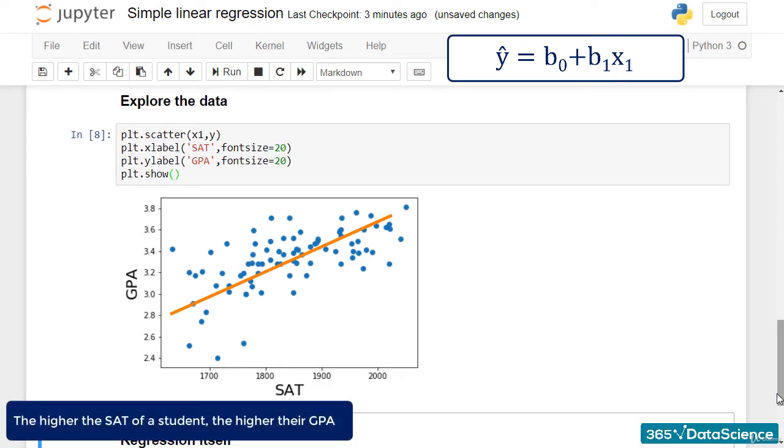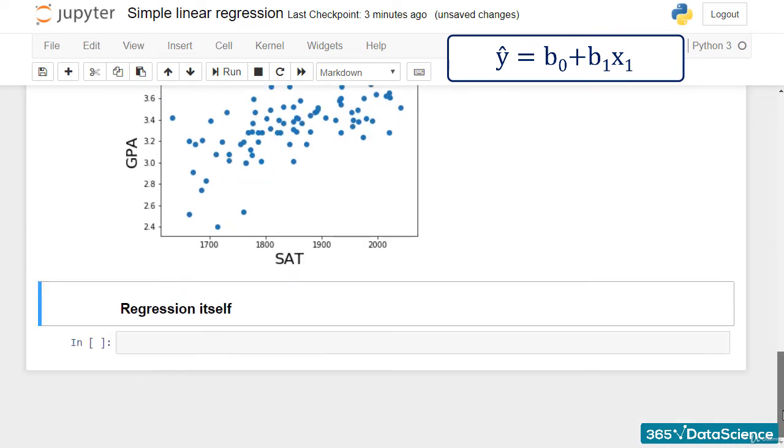In general, the higher the SAT of a student, the higher their GPA. Great! Next, we need to create a new variable, which I'll call x.